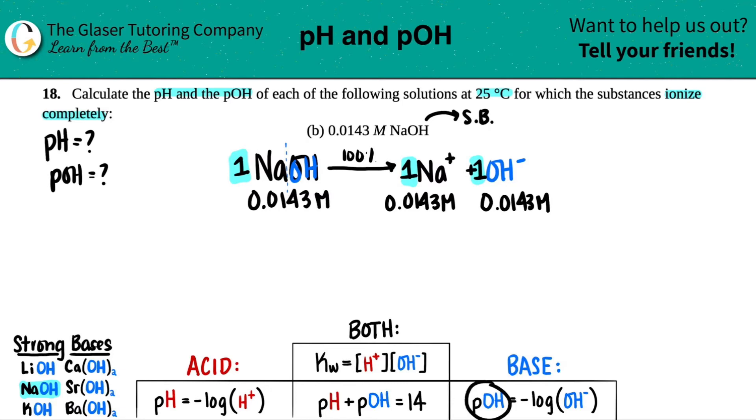Oh, I can find a pOH, because I have the OH minus concentration. That's this right here. And this is the only number now that we care about. I don't care about the Na, and I don't care about the NaOH. All I care about is that the OH minus was 0.0143 molarity. And that's this right here. So I can find the pOH by just doing the negative log of 0.0143.